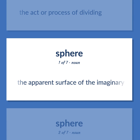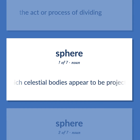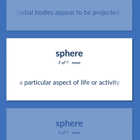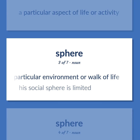Sphere: the apparent surface of the imaginary sphere on which celestial bodies appear to be projected. Also, a particular aspect of life or activity, or a particular environment or walk of life — his social sphere is limited.